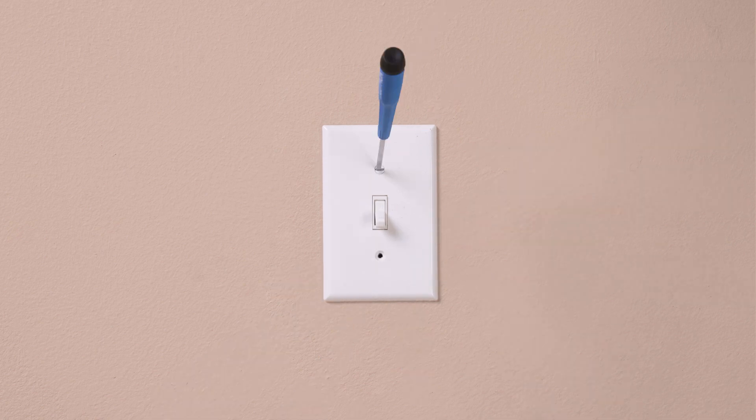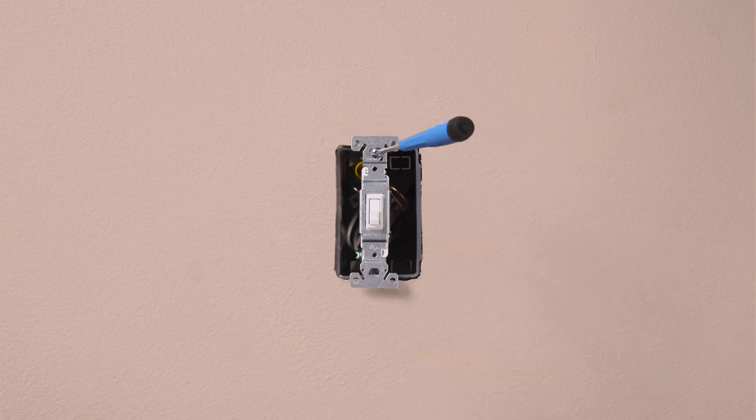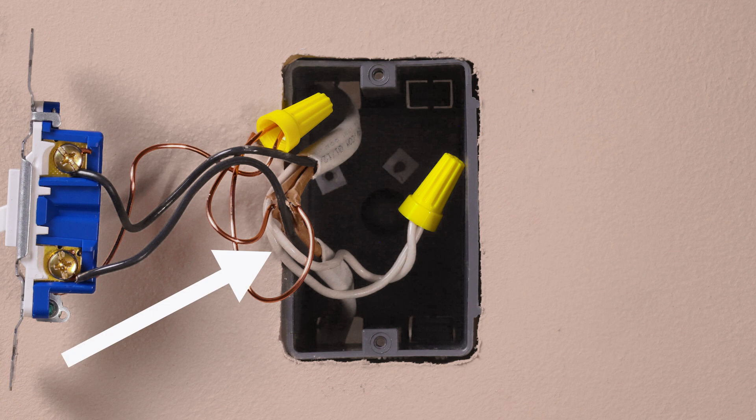Before removing your old switch, you will want to make sure you have a neutral connection in the wall. These are usually white wires in the back of the box. The Caseta by Lutron Claro smart switch will require a connection into this neutral wire to operate.